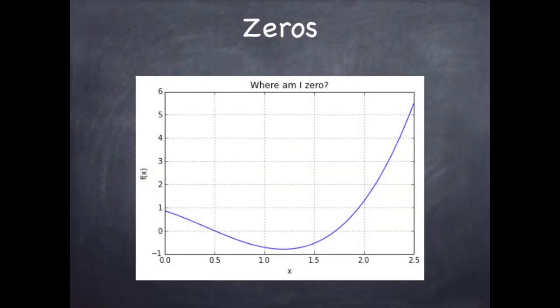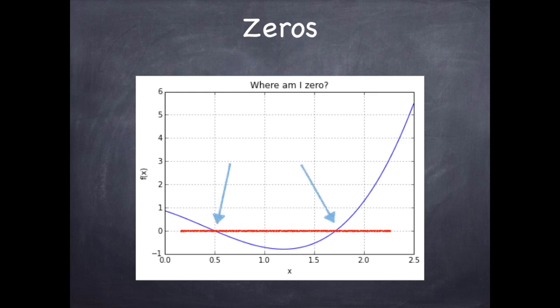First, the idea is I've got some function, and the question is where is that function equal to zero? In this particular example, there are two zeros in the function, just in the domain that's plotted there.